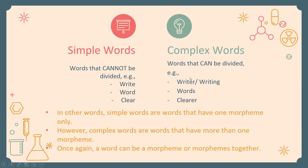A once again, a word can be one morpheme or multiple morphemes together. We will take this further when we discuss word class. In general, simple words cannot be divided, while complex words can be divided into two or more parts — they are words to which something has been added.